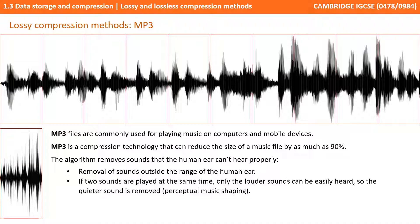The algorithm actually removes sounds that the human ear can't hear properly. For example, it could remove sounds outside the range of the human ear. If two sounds are played at the same time, it can identify only the louder sound, which can be more easily heard, and then remove the quieter, softer sound. This is known as perceptual music shaping.